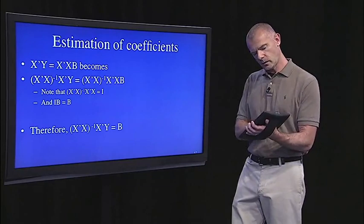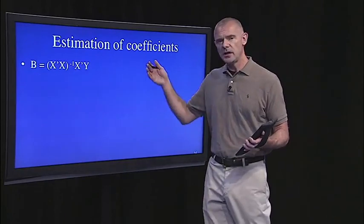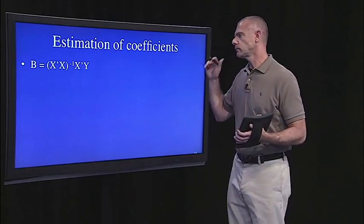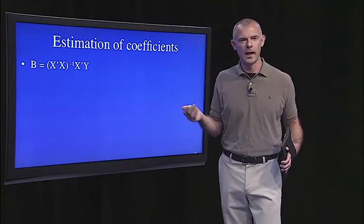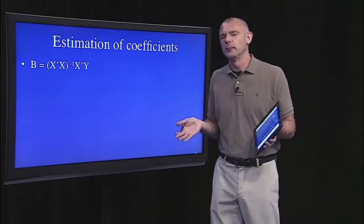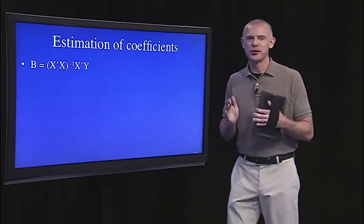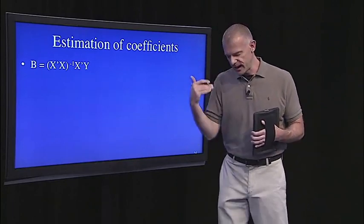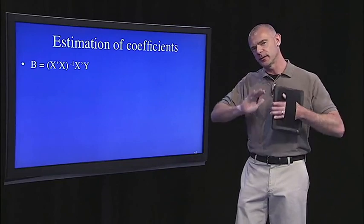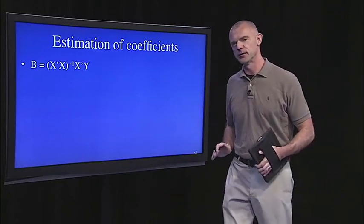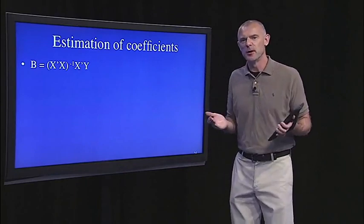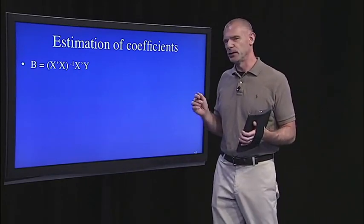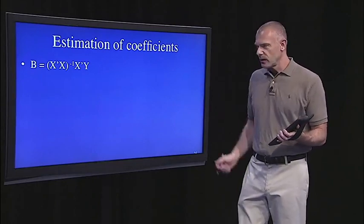B is just X transpose times X, the inverse of that, times X transpose, times Y. I know that's not incredibly intuitive, and it shouldn't be. But the point is, you can see in action, you can do this by hand if you had to, if you lost all electricity and there's no internet and no R software, you could do a multiple regression analysis by hand. It would be really tedious, but you could do it now.